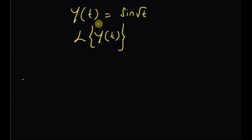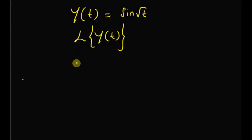The first step is to transform this equation into a differential equation, which can then be used to solve for the Laplace transform. For the sake of simplicity, we drop the time index t on the left-hand side, so we have y = sin(√t).